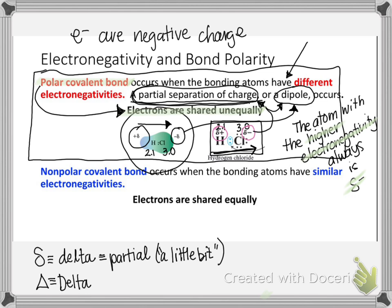The other extreme is called a nonpolar covalent bond — or purely covalent. The prefix 'non' means not. A nonpolar covalent bond occurs when the elements have similar electronegativities, so the electron pair is not pulled toward one atom or the other. As a consequence, the electrons are shared equally — they're purely shared equally. Let's see how we can apply this to bonds using electronegativity values and a couple of examples.